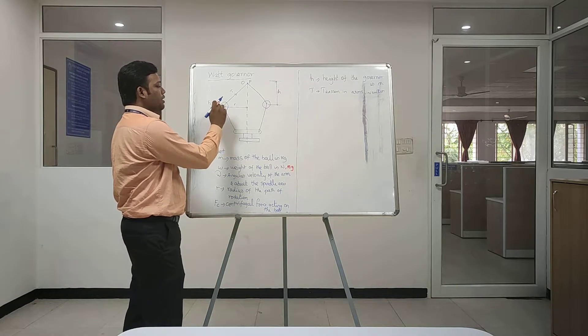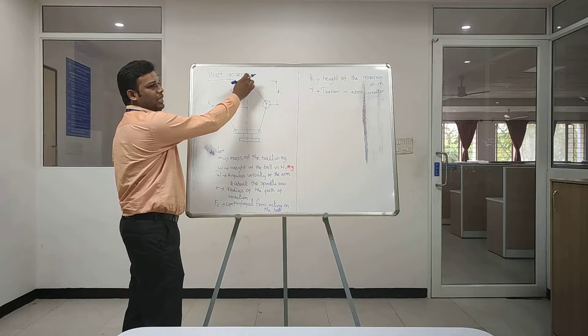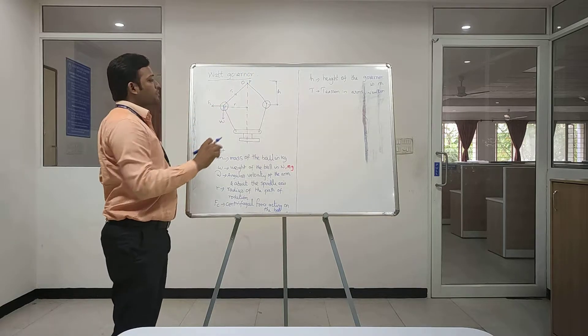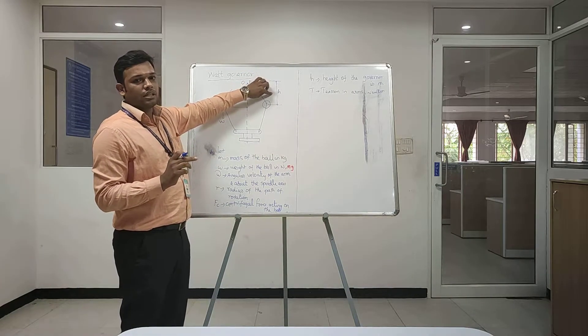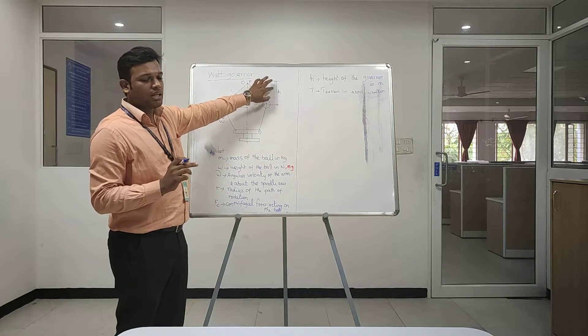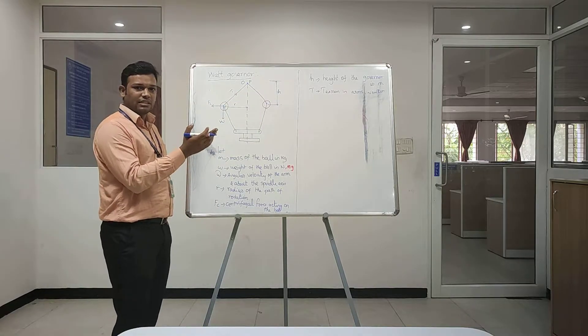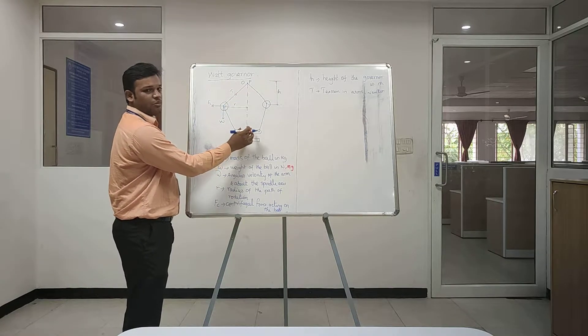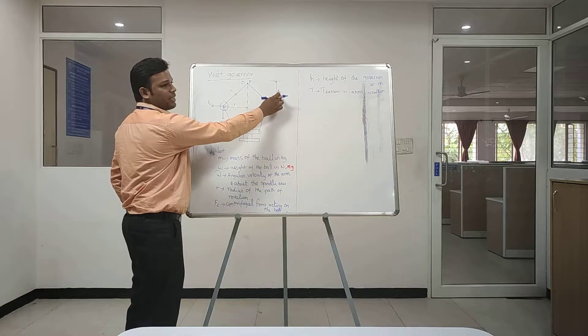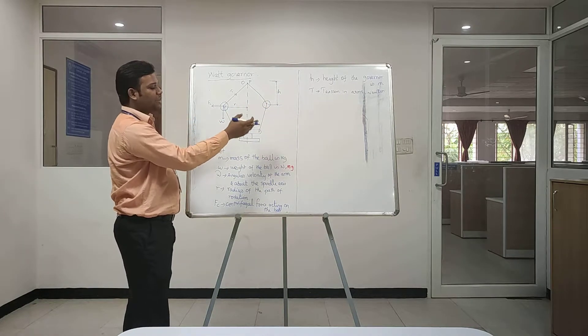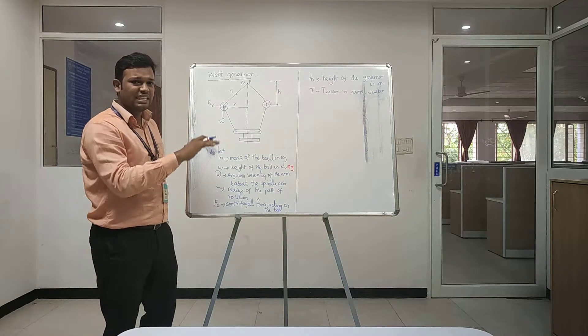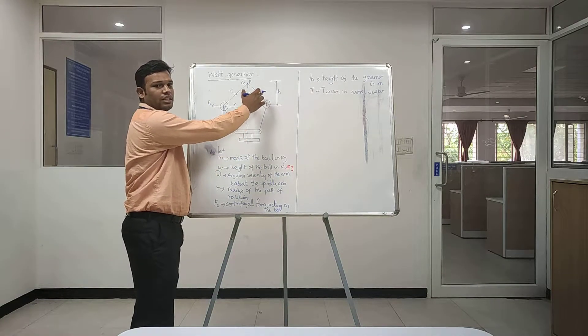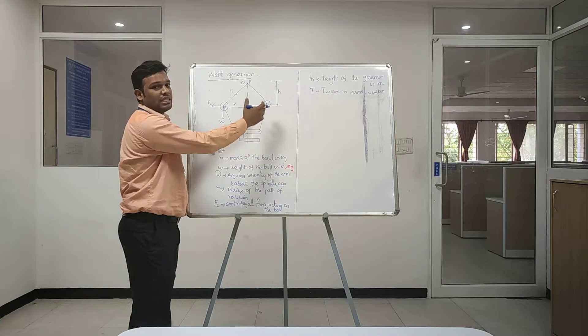There will be a tension between the ball and the point P, the upper point P. This parameter is called height. When speed of an engine increases, this sleeve will move upward and the height of the governor will reduce. When speed of an engine decreases, the height of a governor will increase.